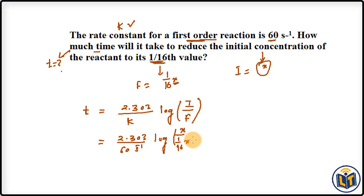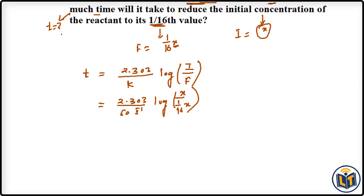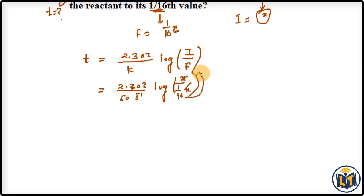Now we can do the simplification. Here, x and x will cancel out, and 16 will go up. The setup we get is 2.303 upon 60, log 16.